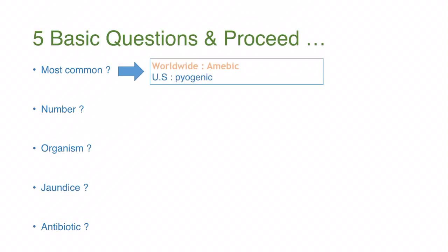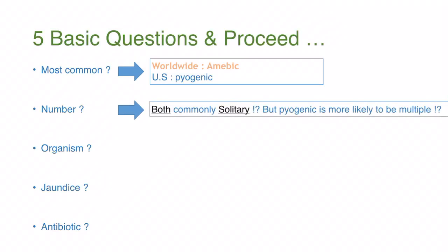The second question is about number, and this is one of the confusing points. If you google it or look in radiology textbooks, you may encounter common mistakes. The answer is: both amoebic and pyogenic are commonly solitary, but the pyogenic is more likely to be multiple. It's not true that amoebic is always solitary and pyogenic always multiple.